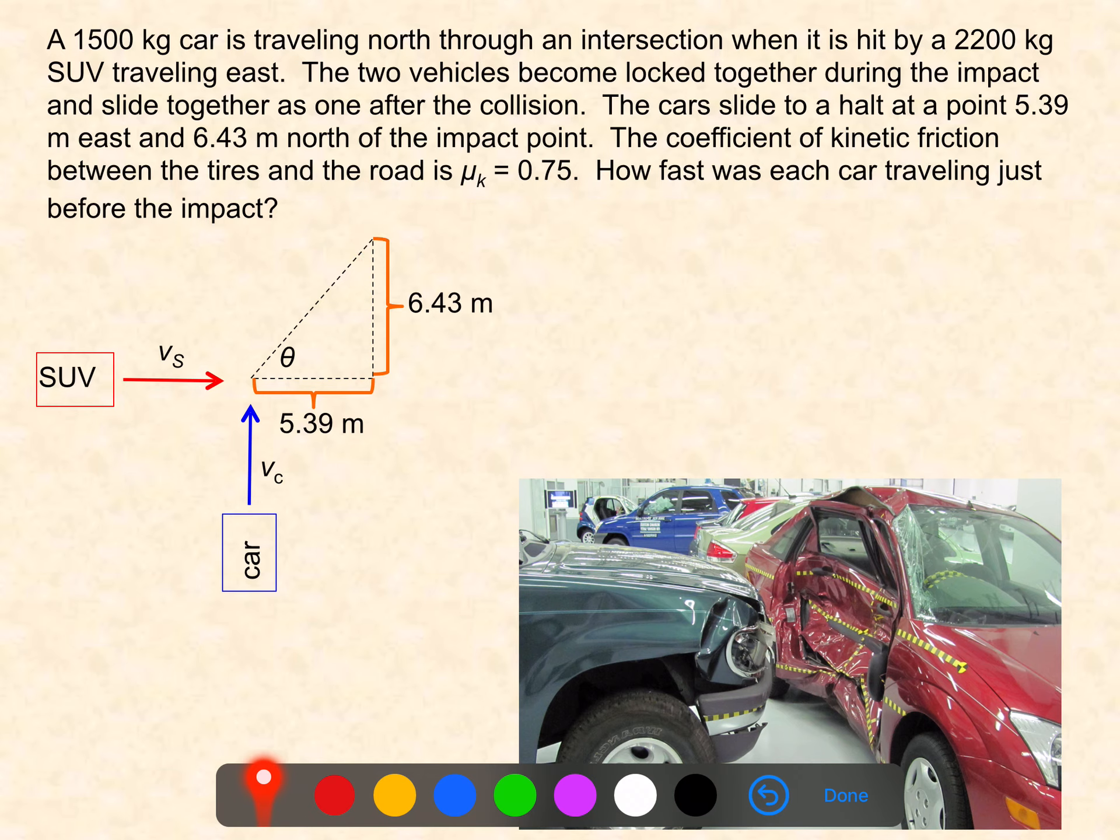Then they slide to a stop. They have some velocity here after the collision, which I'll call V sub SC. And then that velocity is slowly becoming less and less as the friction between the tires and the road slows the combined car mass down to zero.